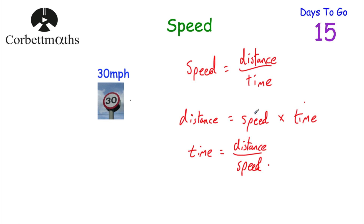If I was travelling 30 miles per hour and I travelled for two hours, that would be two lots of 30 miles — 30 times 2 is equal to 60, so I would travel 60 miles. And finally, if I travelled 150 miles at a speed of 30 miles per hour, dividing the distance by the speed tells me how long the journey took, which would be 5 hours. So: speed equals distance divided by time, distance equals speed times time, and time equals distance divided by speed.